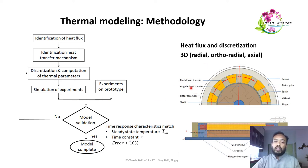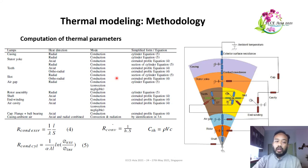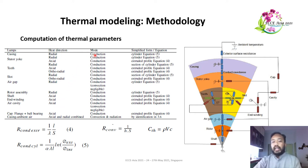On the right-hand side, we can see the lumps of the discretized machine, with the red arrows indicating the direction of heat flux in three dimensions. We have radial, axial, and orthoradial directions — shown from both the side view and the front view of the machine. The table lists the lumps, their heat directions across three dimensions, and the mode of heat transfer, either conduction or convection.